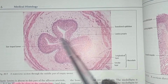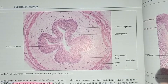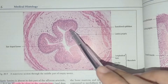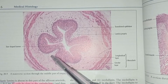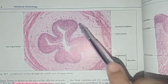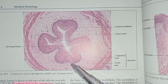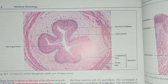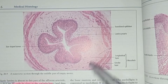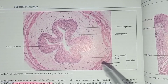Then we have the epithelium followed by the second layer, which is the lamina propria, in close association with the epithelium. Outside the lamina propria, the muscularis mucosa is absent in the ureter.